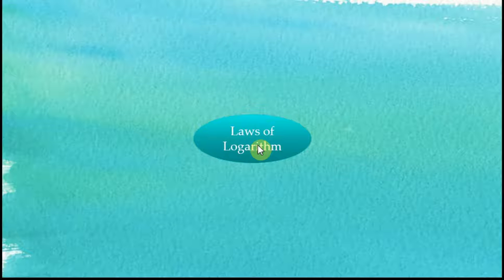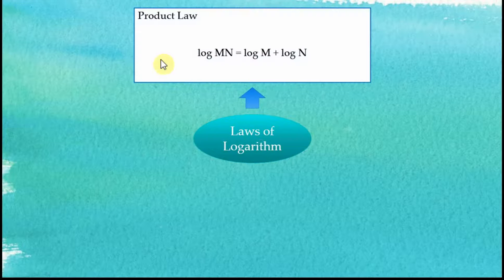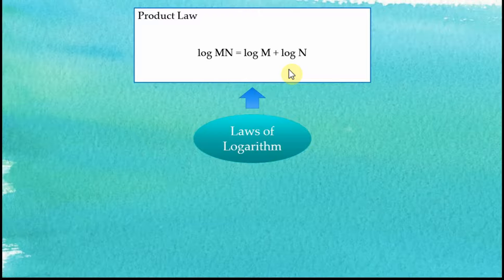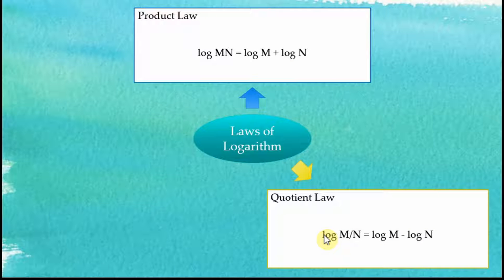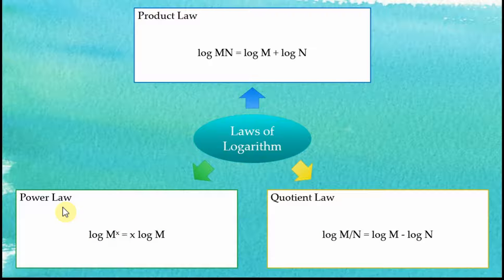In this video, I'm going to discuss the three laws of logarithms that we usually use to solve problems involving logarithms. Number one is the product law: log mn = log m + log n. Number two is the quotient law: log m over n = log m minus log n. And number three is the power law: log m to the power of x = x log m.